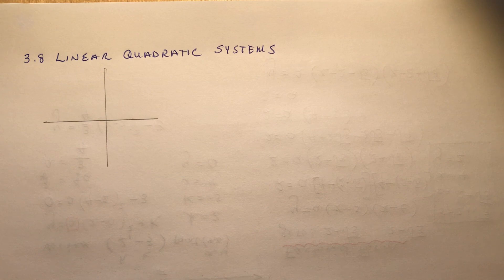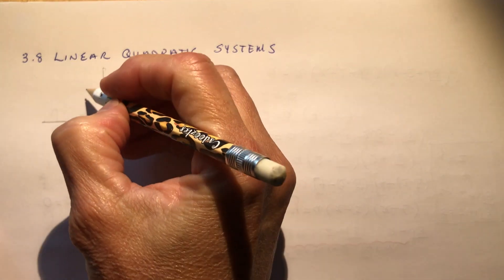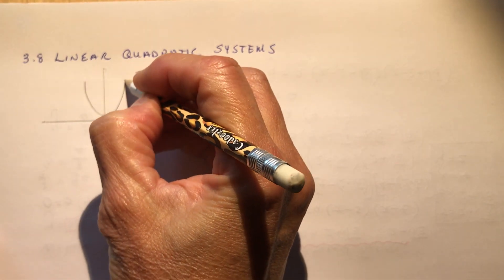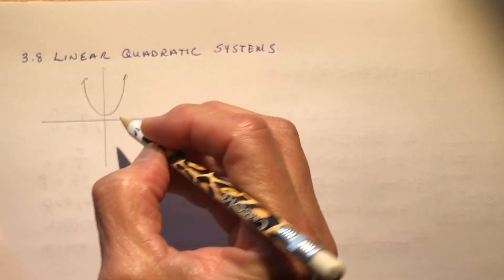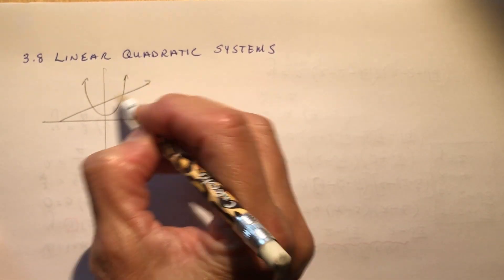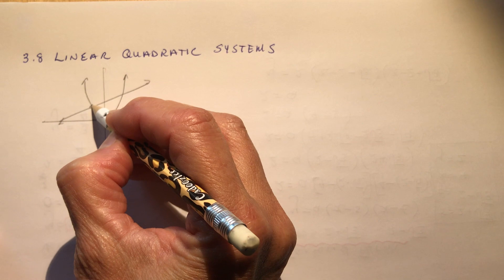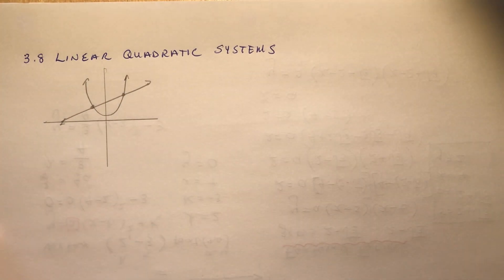So a linear quadratic system is just what it says it is. It's how does a line intersect with a parabola? So if I have a quadratic like this and I have a line through it like this, then you would be able to find the two points of intersection.